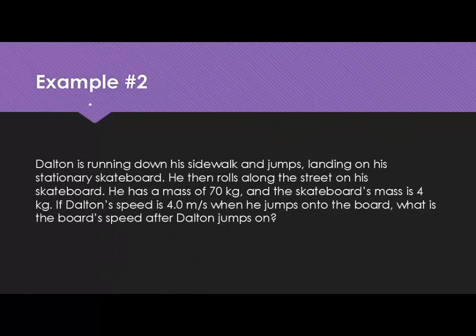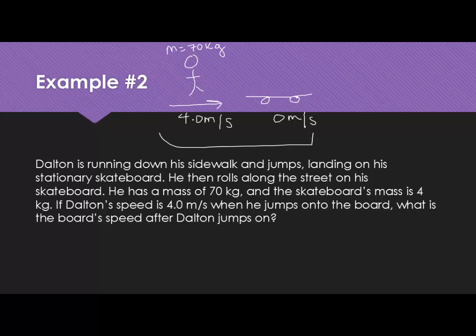Here's another quick example. Dalton is running down his sidewalk and jumps, landing on his stationary skateboard. He then rolls along the street on his skateboard. He has a mass of 70, and the skateboard's mass is 4. If Dalton's speed is 4 meters per second when he jumps onto the board, what is the board's speed after he jumps on it? So here is Dalton running, speed of 4 meters per second. And here is the skateboard. The skateboard's velocity initially is 0. It's at rest. After they are a system, Dalton and his skateboard are together. They are going to move off at some velocity.